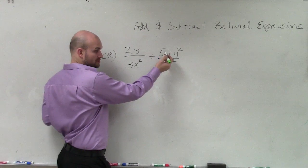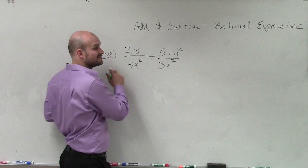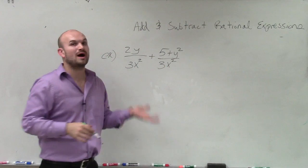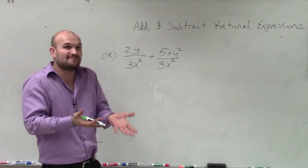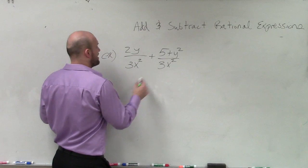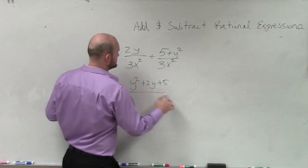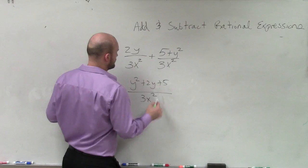But when I look at my numerators, I notice that that is a 5, which is a number. This is a y, which has a variable factor of y to the first power, and this is a variable factor of y to the second power. So therefore, they don't have the same variable factors. So my final answer would just be y² plus 2y plus 5 divided by 3x².